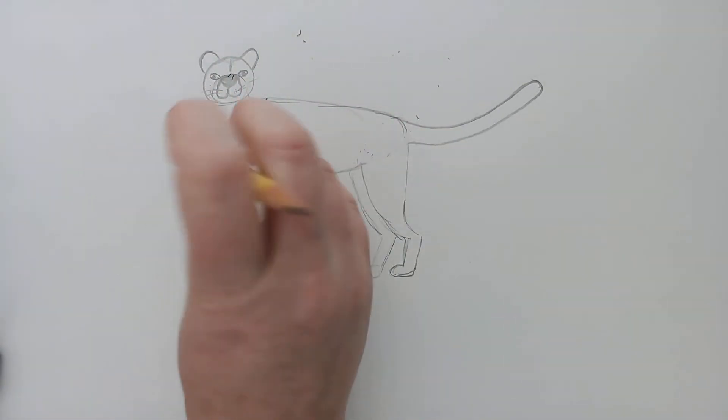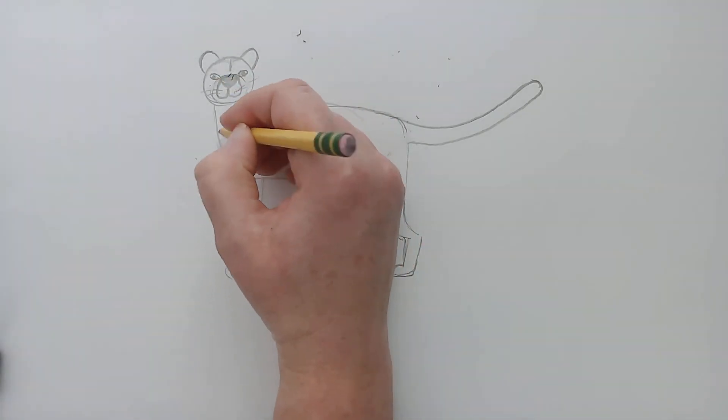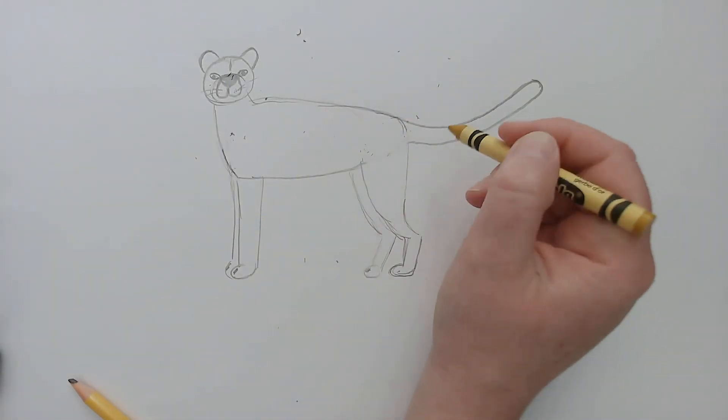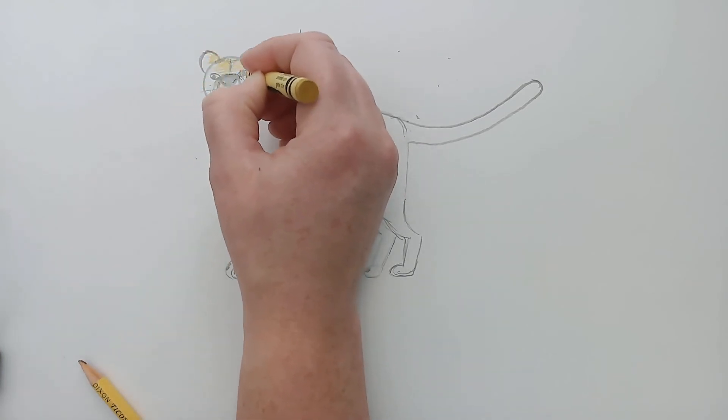Then you're going to start adding details to your picture. Again, you can choose to add color to this if you would like, or you can just choose to add shading with your pencil. So I think I'm going to choose to add some color to this. I'm going to try to match the color the best I can to this cheetah color. And I found kind of a yellowish gold color. So I'm going to start with that. Still not quite the right color,